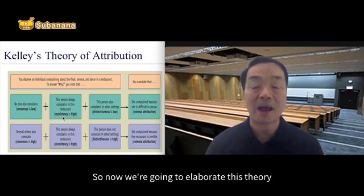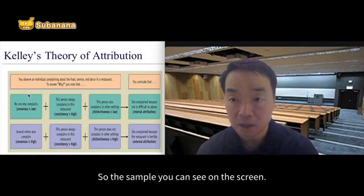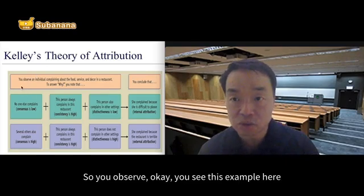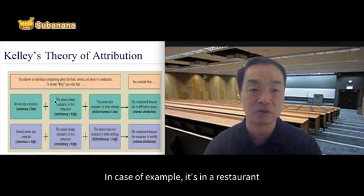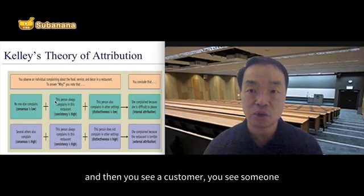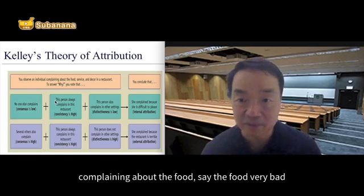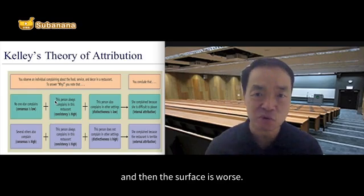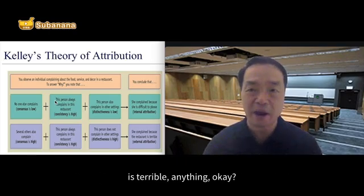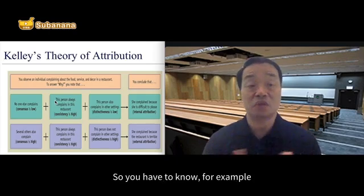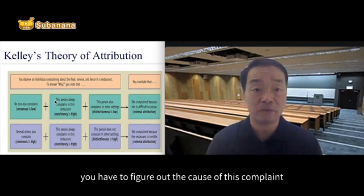So now we are going to elaborate this theory using a sample. You observe an individual complaining about the food. For example, this is a restaurant, and you see a customer complaining about the food, saying the food is very bad, the service is worse, and there are complaints about the decoration of the restaurant. If you are the boss of the restaurant, you have to figure out the cause of this complaint.